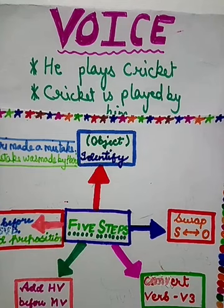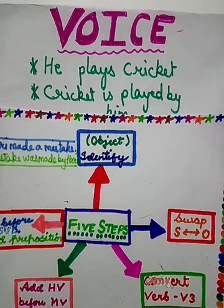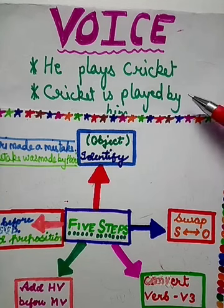Here, 'He plays cricket' — who played cricket? He. So this sentence is in active voice. And passive voice: when the subject of the verb receives the action, the verb is said to be in passive voice. The second sentence, 'Cricket is played by him,' is in passive voice.